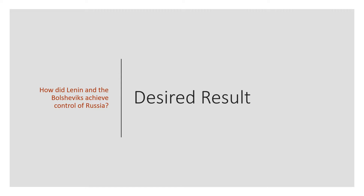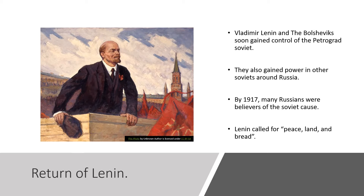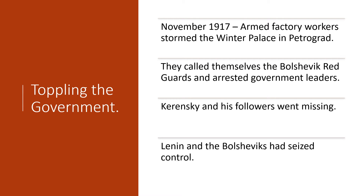Our desired result: how did Lenin and the Bolsheviks achieve control of Russia? Vladimir Lenin — whose image you see in the picture there — and the Bolsheviks soon gained control of the Petrograd Soviet. They also gained power in other soviets around Russia. By 1917, many Russians were believers of the Soviet cause. Lenin called for peace, land, and bread.